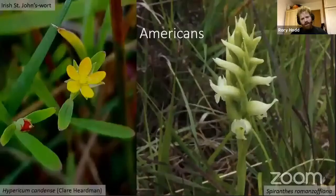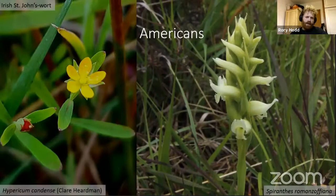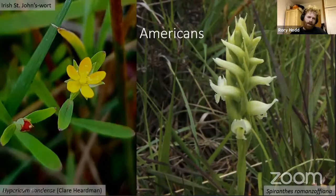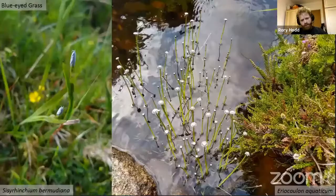Then the American species — Spiranthes on the right and Hypericum canadense, the Irish St. John's wort, on the left. How did they get here? The Spiranthes is widespread in America but only restricted to the western seaboard of Europe. Are they relics or have they been brought in more recently, more recent introductions? And again, with the blue-eyed grass, Sisyrinchium bermudiana and the pipewort Eriocaulon aquaticum, you wonder what is their origin in Ireland.